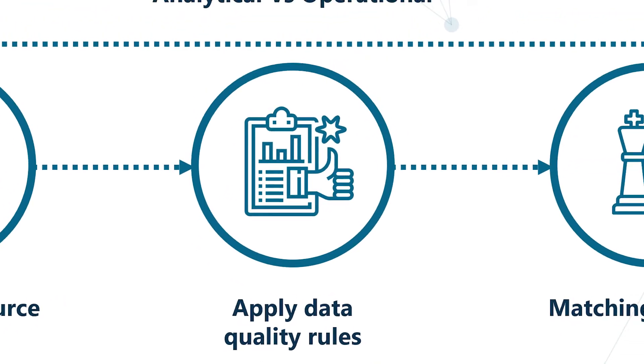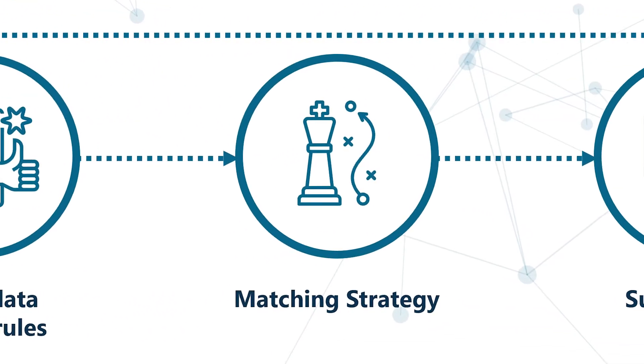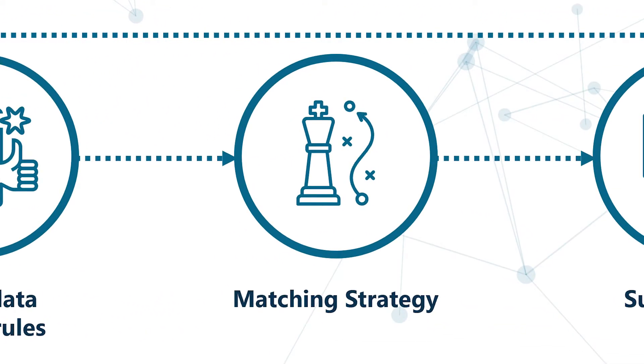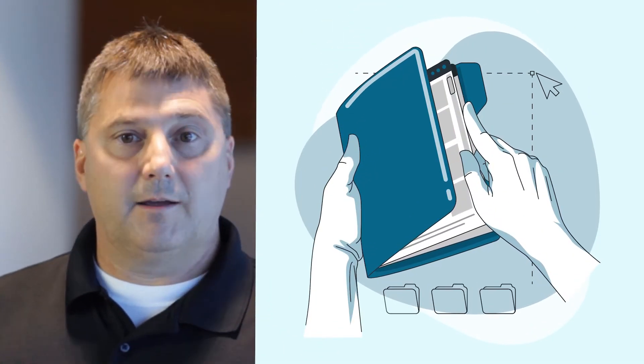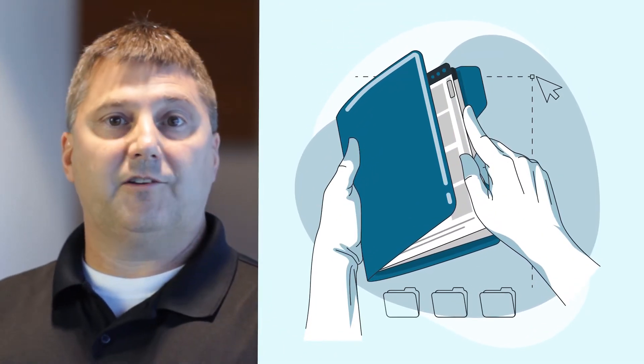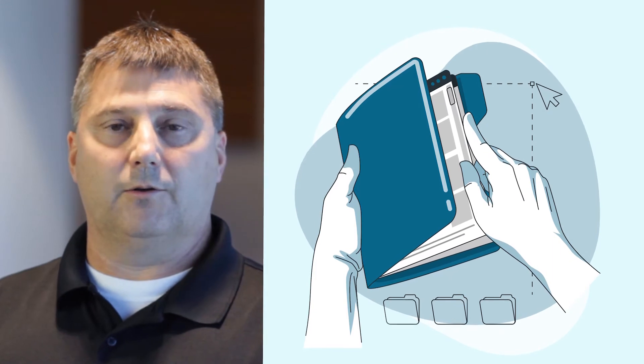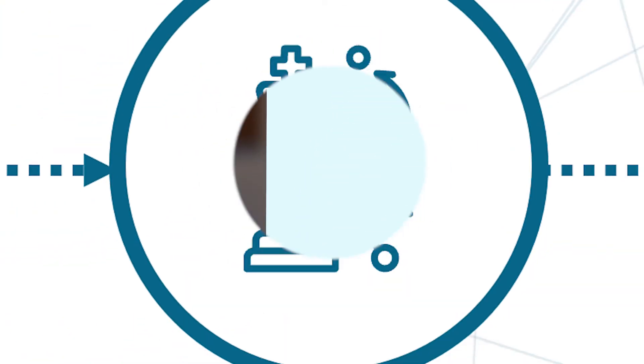Taking data quality into account will improve your matching strategy. Incorporating business rules into that matching strategy will help you collect and identify a full matching group and ultimately create a golden record.